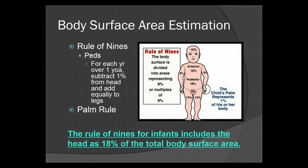For pediatrics, for each year over 1-year-old, subtract 1% from the head and add equally to the legs. You see the 18% for the pediatric's head simply because their head is so much larger than their body. Anything under a year old it's going to be 18%, and then every year after that subtract 1% and distribute evenly between the legs. Otherwise, not much has changed except the legs are lower percentages because it all got moved up to the head.